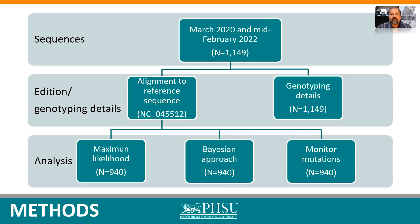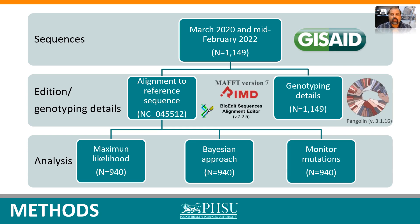A total of around 1,000 full genome nucleotide sequences from the Dominican Republic were obtained from the GISAID database. The Multiple Sequence Alignment program MAFFT and BioEdit Sequence Alignment Editor were used to perform sequence alignment and editing respectively. The genotype lineage details were obtained using the Pangolin web application.